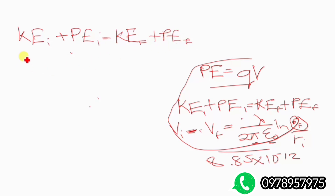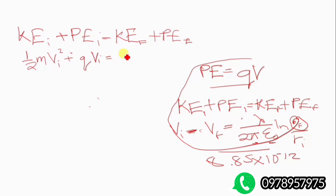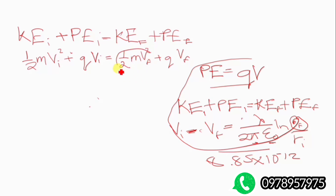The kinetic energy is given by one-half m v squared. So we have one-half m v_i squared plus q V initial equals one-half m v_f squared plus q V final. Remember, the final velocity will be zero because we're trying to find how close the proton gets — at the closest point it stops moving — so the final kinetic energy term equals zero.